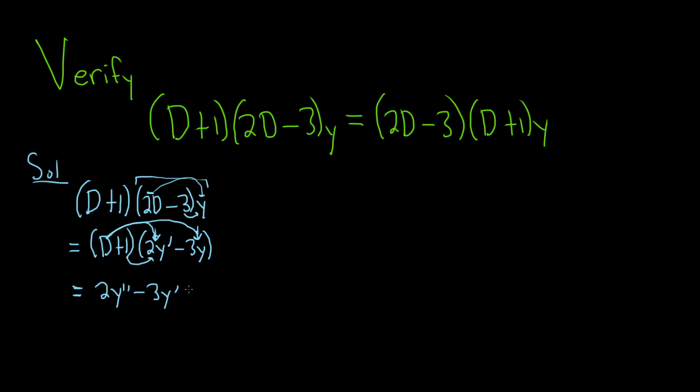Then take the 1 and multiply it by that, so 2y prime, and then multiply by that, minus 3y. It takes a little bit of practice. So this is 2y double prime, and when you combine these you get minus y prime and then minus 3y. That's the left hand side.